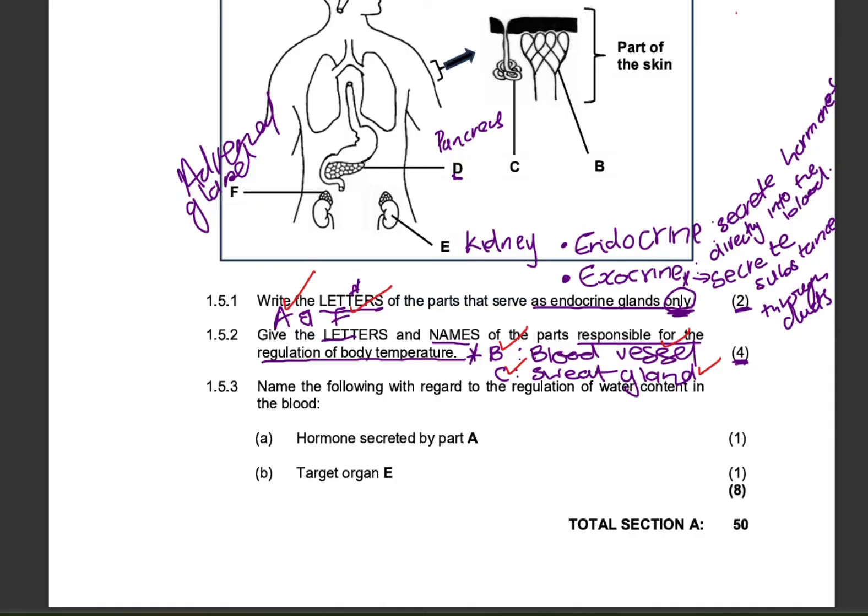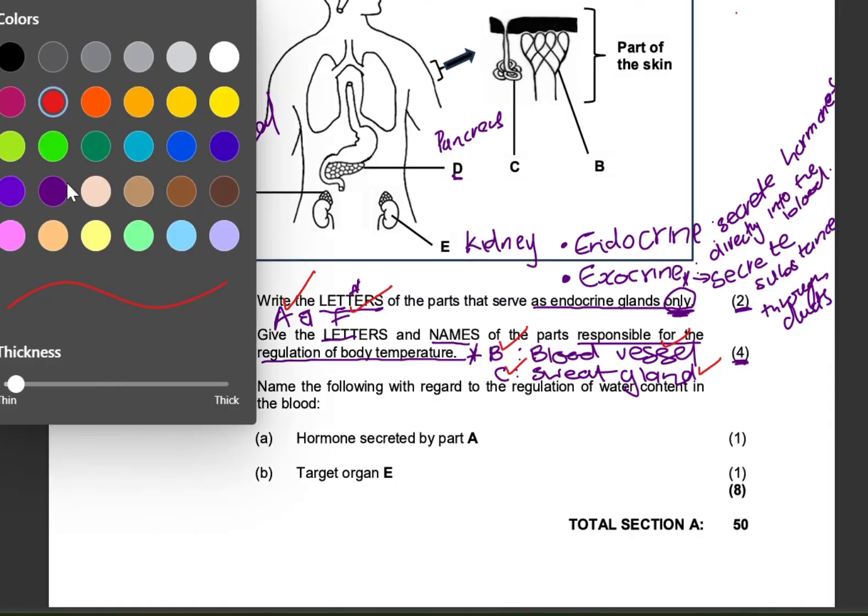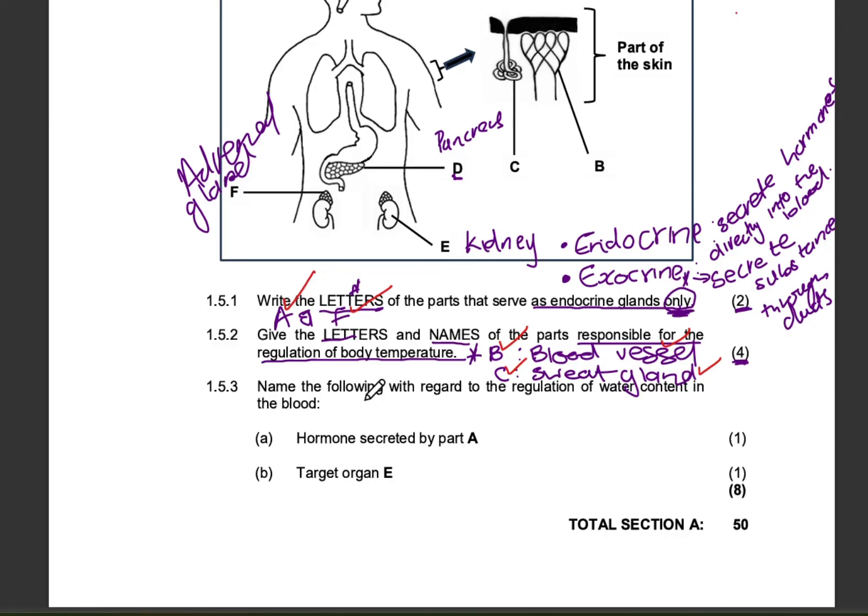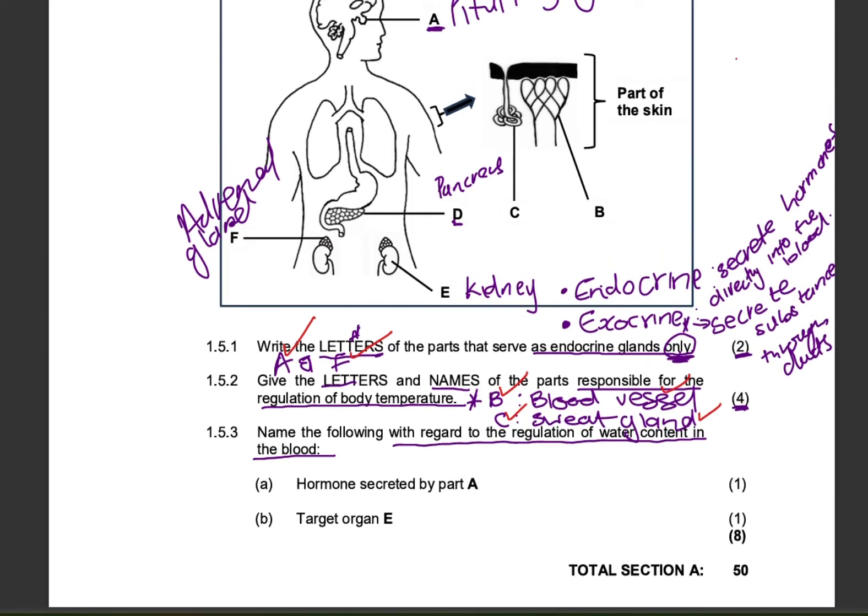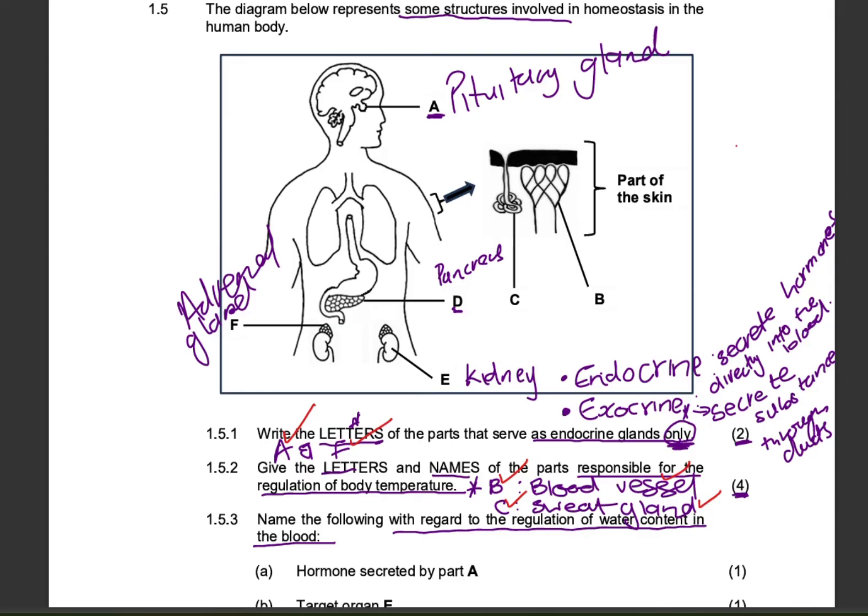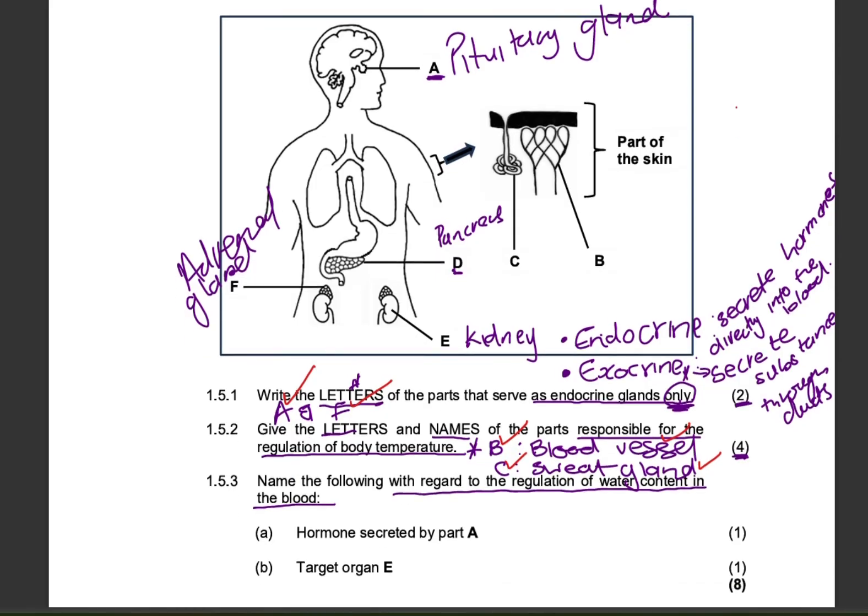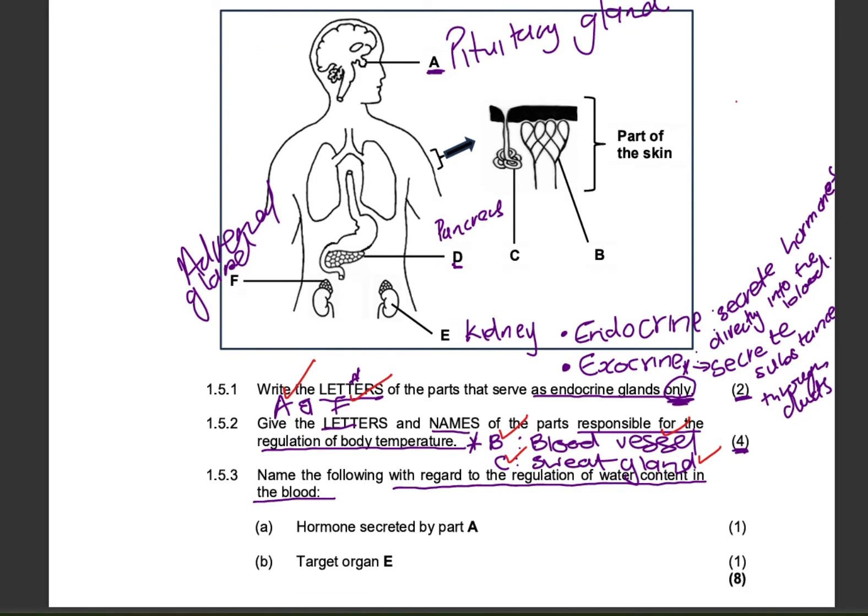Let's move to the next question. 1.5.3. Name the following with regard to the regulation of water content in the blood. Let's name the hormone that is secreted by part A. In relation to water content in the blood. Part A is the pituitary gland. Which hormone is secreted by the pituitary gland that regulates water in the blood? Water content or water concentration in the blood? That's obviously hormone ADH.